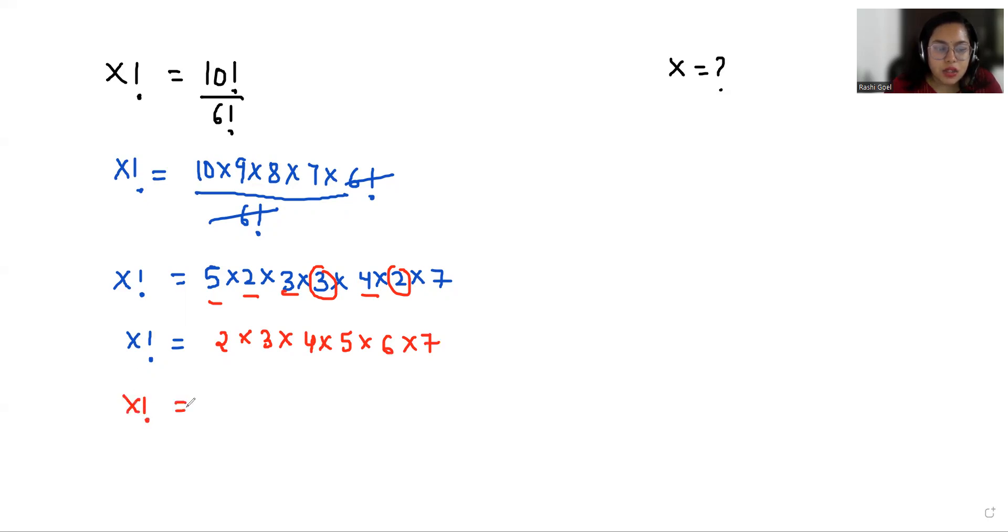Or, x factorial equals 7 times 6 times 5 times 4 times 3 times 2 times 1, and if we multiply any number with 1, it doesn't affect anything. So x factorial equals 7 factorial, and the value of x is 7.